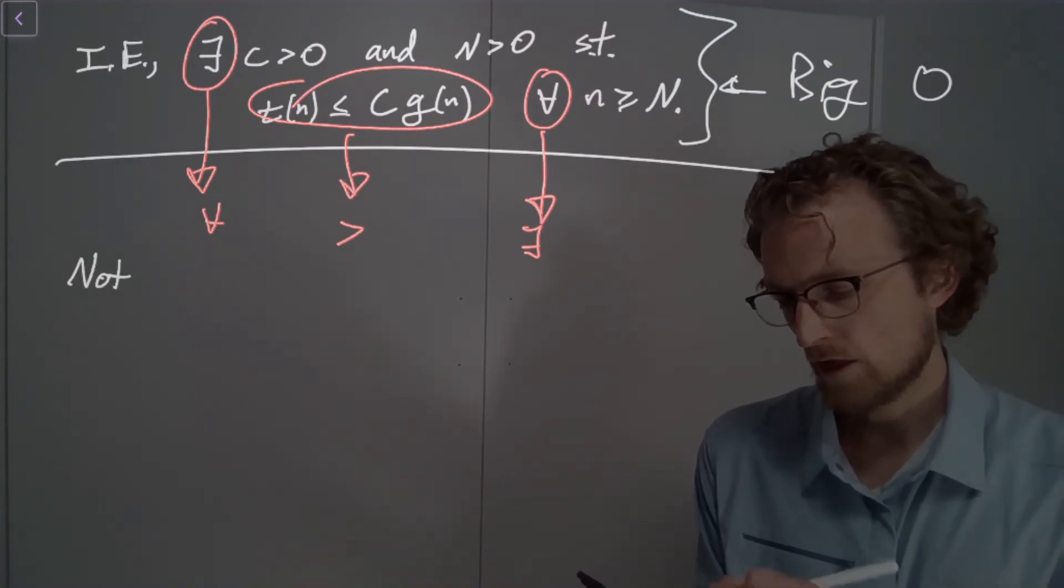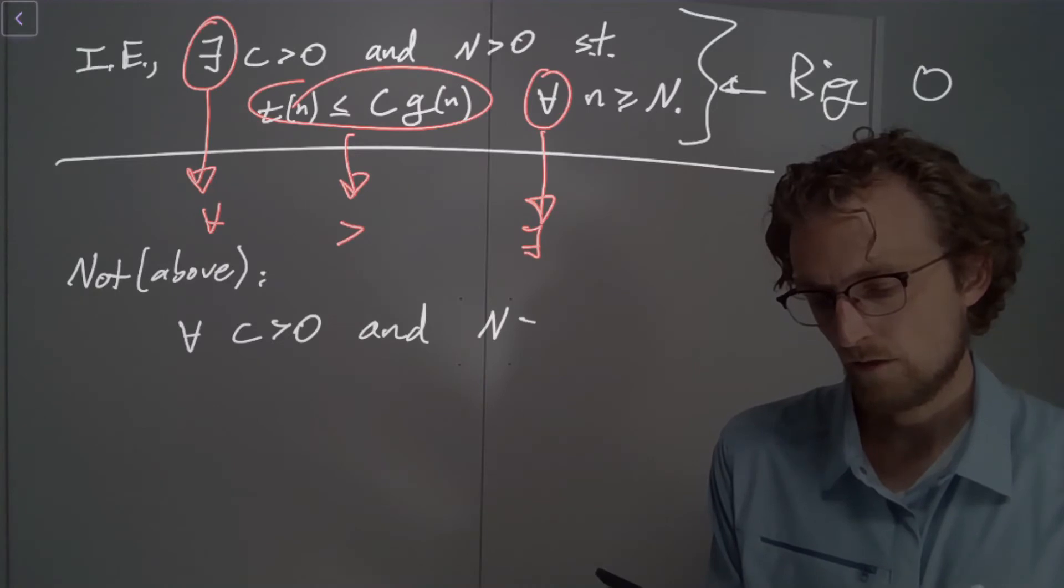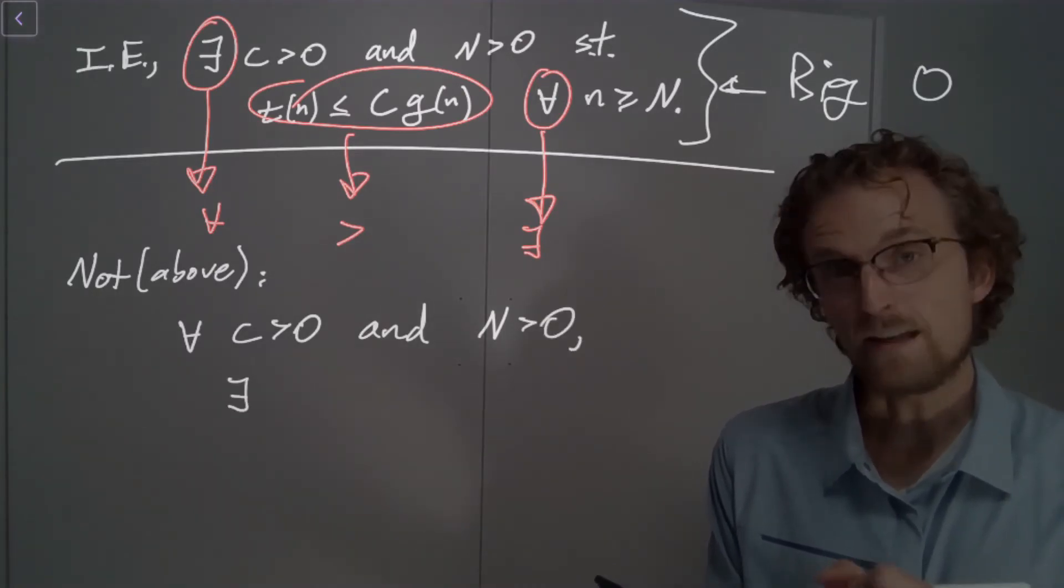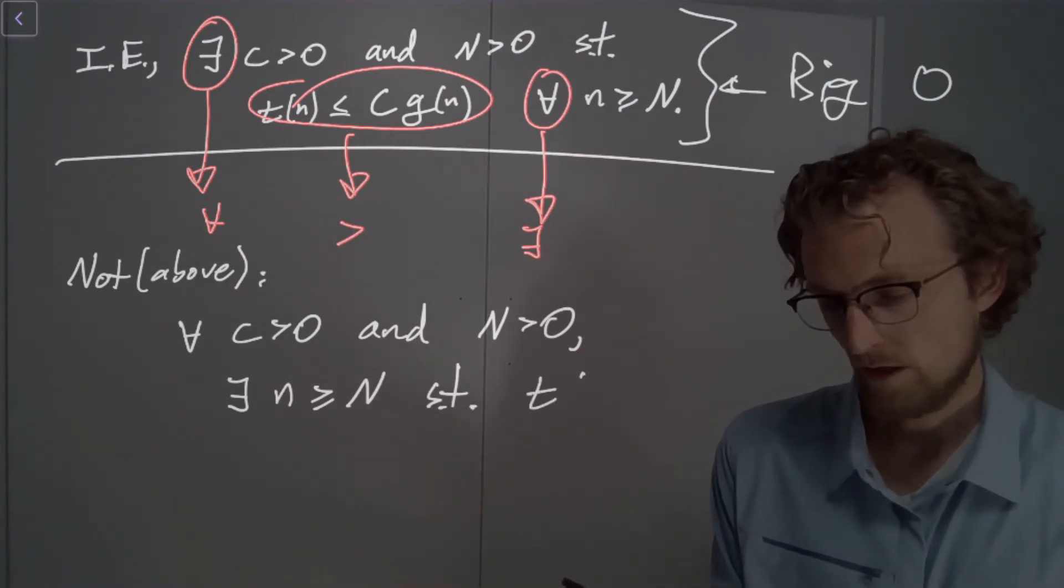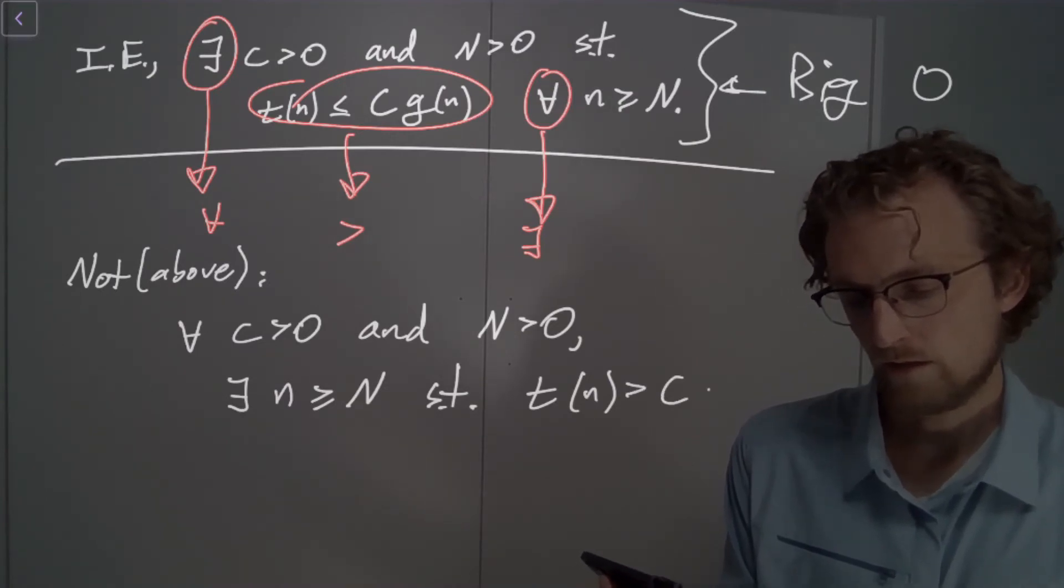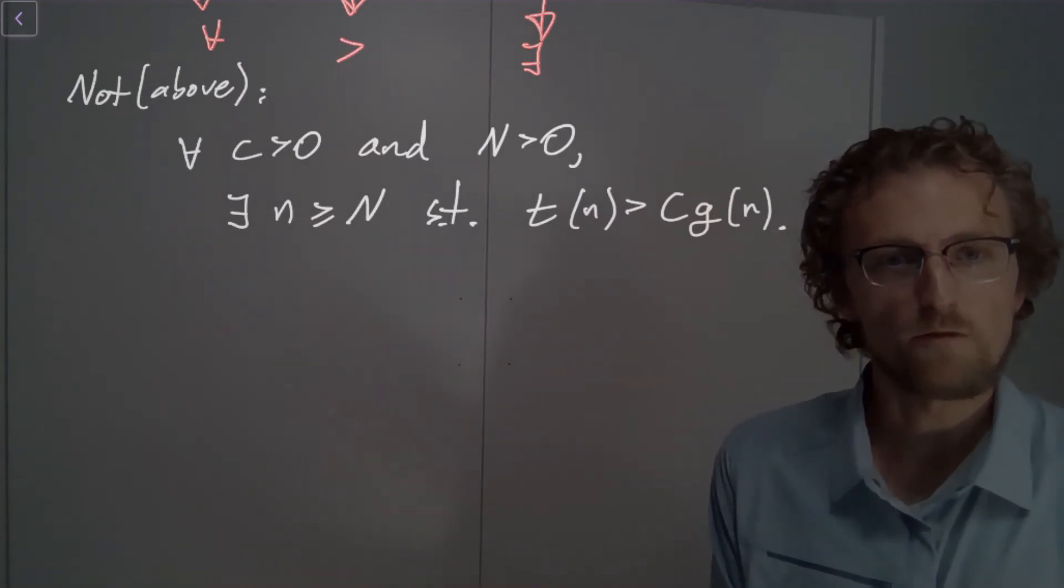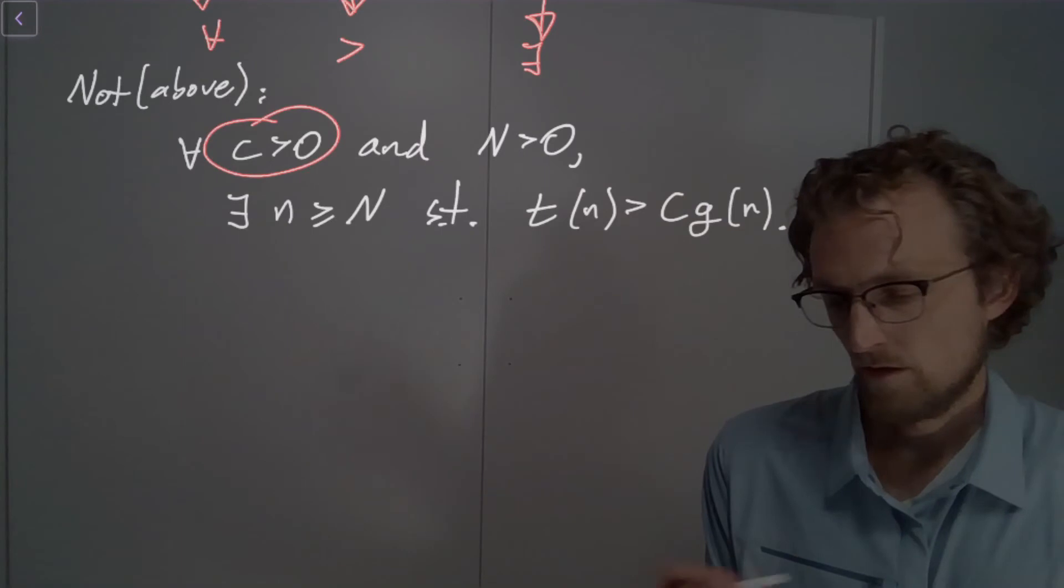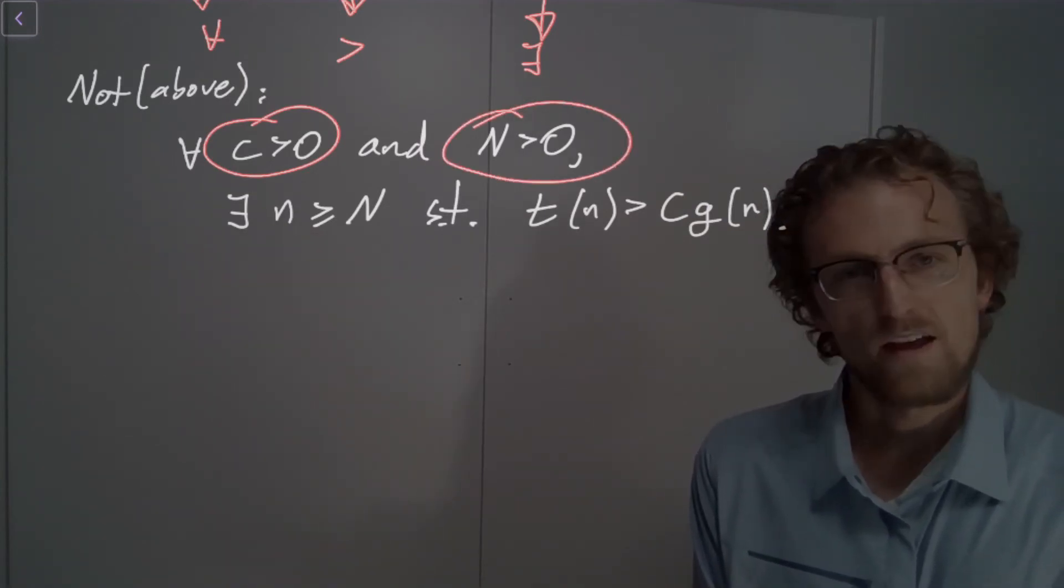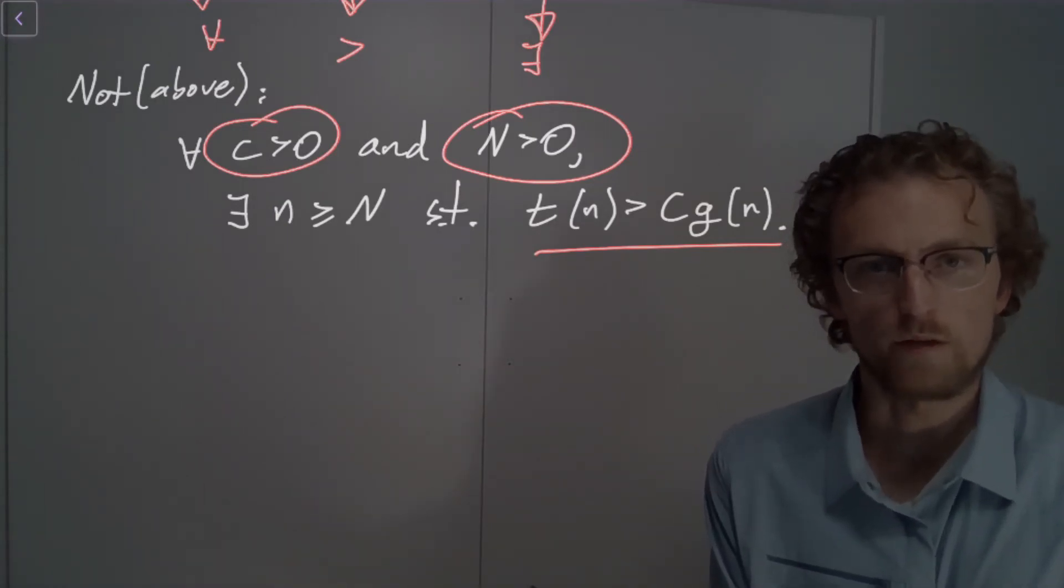So how does this work? How do we write this out? We say, so not big O. We say for all C greater than or equal to zero and N greater than or equal to zero, there exists an n greater than or equal to big N such that this inequality is violated such that T of N is strictly greater than C G of N. So you should spend as much time as you need to to chew on this expression and convince yourself that it means the following thing. We only have to show that there's one point for this to be true.